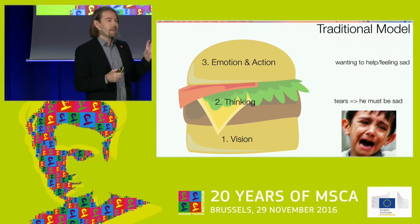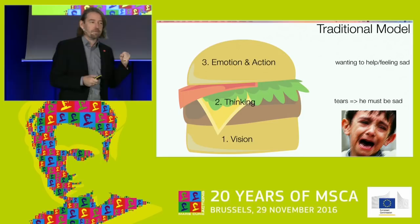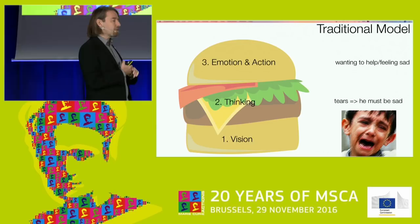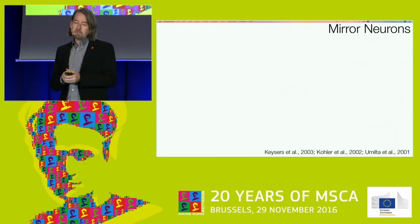I like to call this the hamburger model, because it basically relegates your own emotions and the vision to relatively boring processes — like bread. The real juice and meat of it is hidden in this middle layer of thinking. We all know that hamburgers are not very good for us, and I'll argue that this hamburger has been particularly bad for our understanding of how we relate to other people.